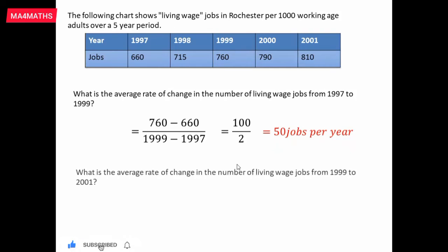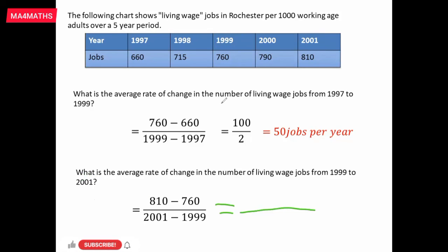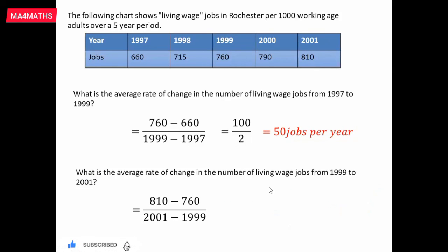In the same way, what is the average rate of change in the number of living wage jobs from 1999 to 2001? In 2001 the number of jobs was 810, and in 1999 it was 760. So (810 minus 760) over (2001 minus 1999) equals 50 over 2, which equals 25 jobs per year.